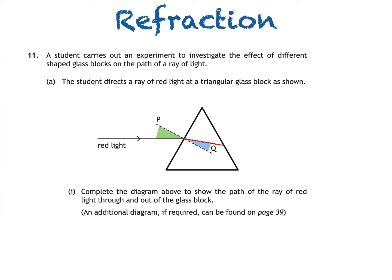Now, so far, I've only drawn the ray of light through the glass block, but what happens to it once it passes out of the block?